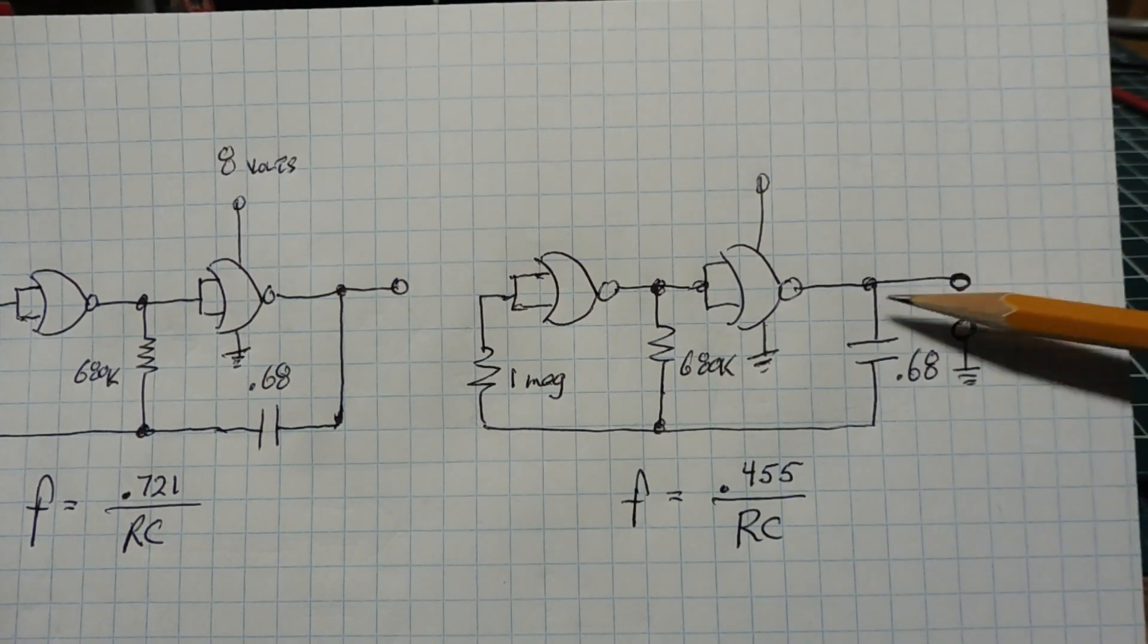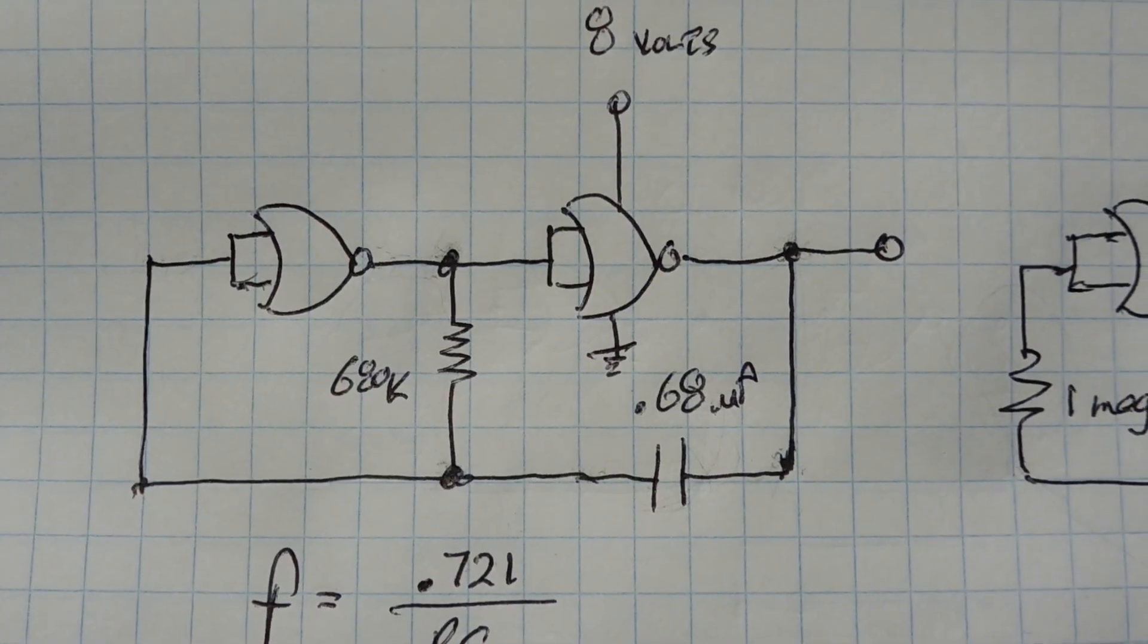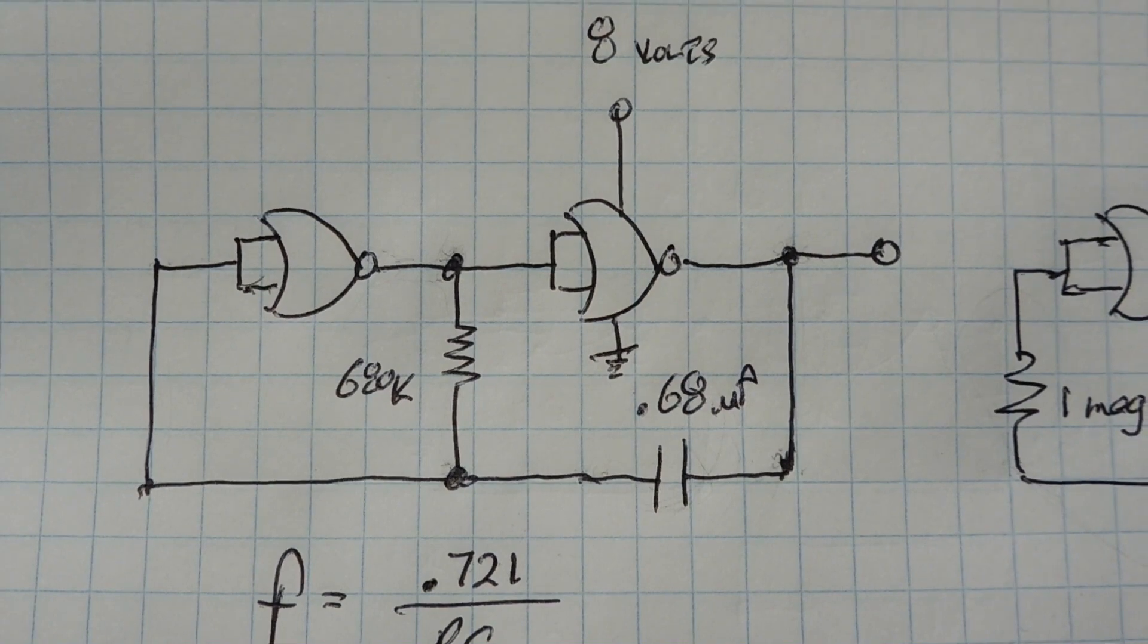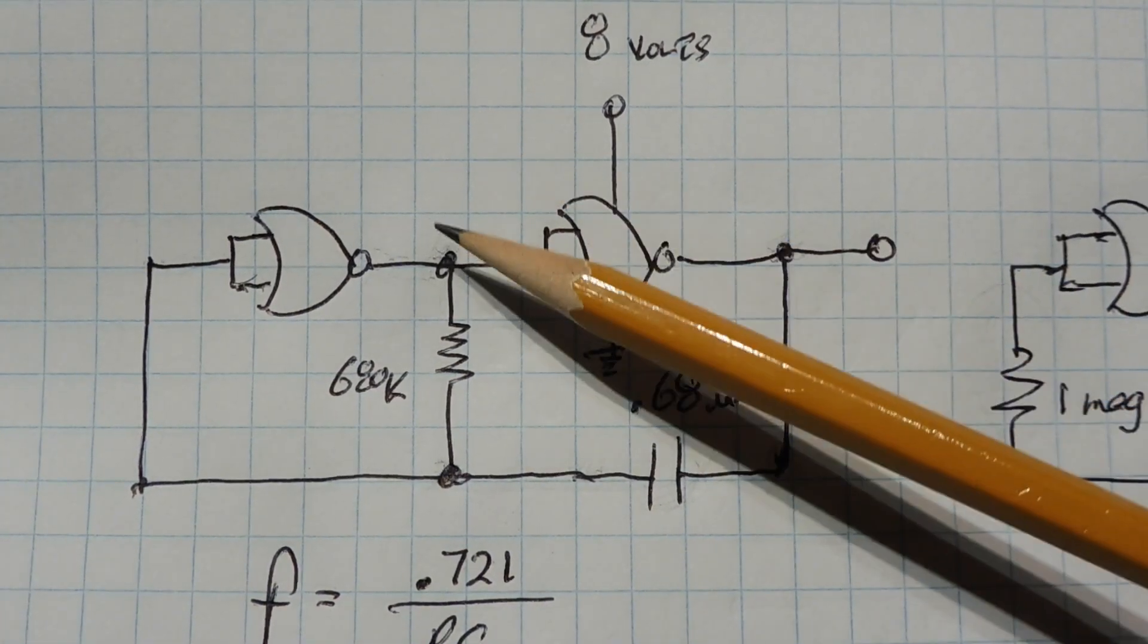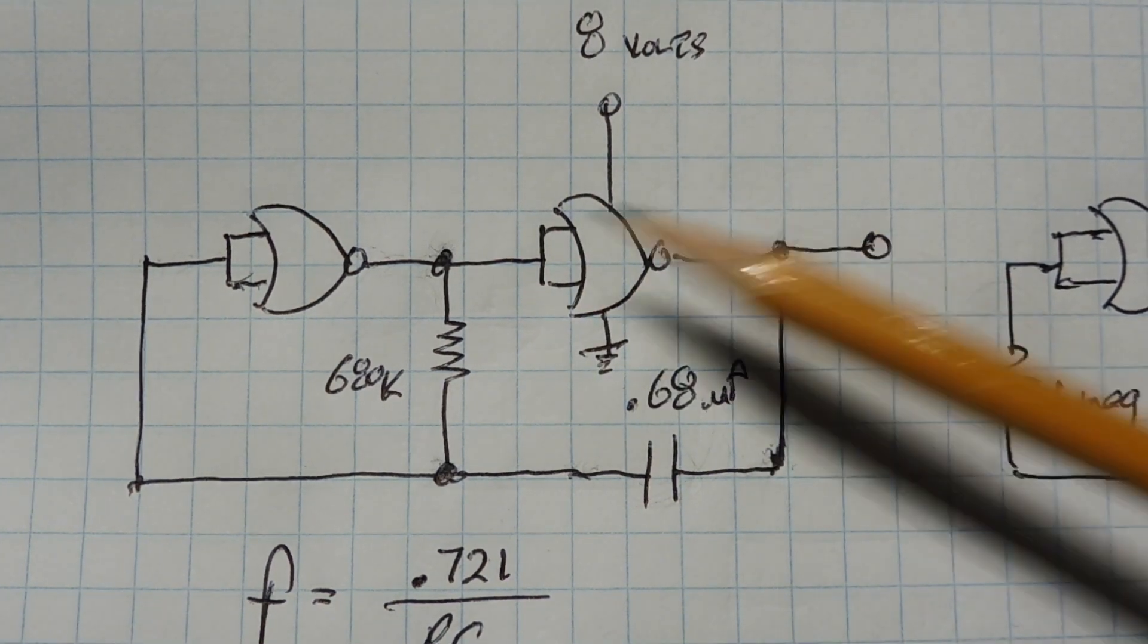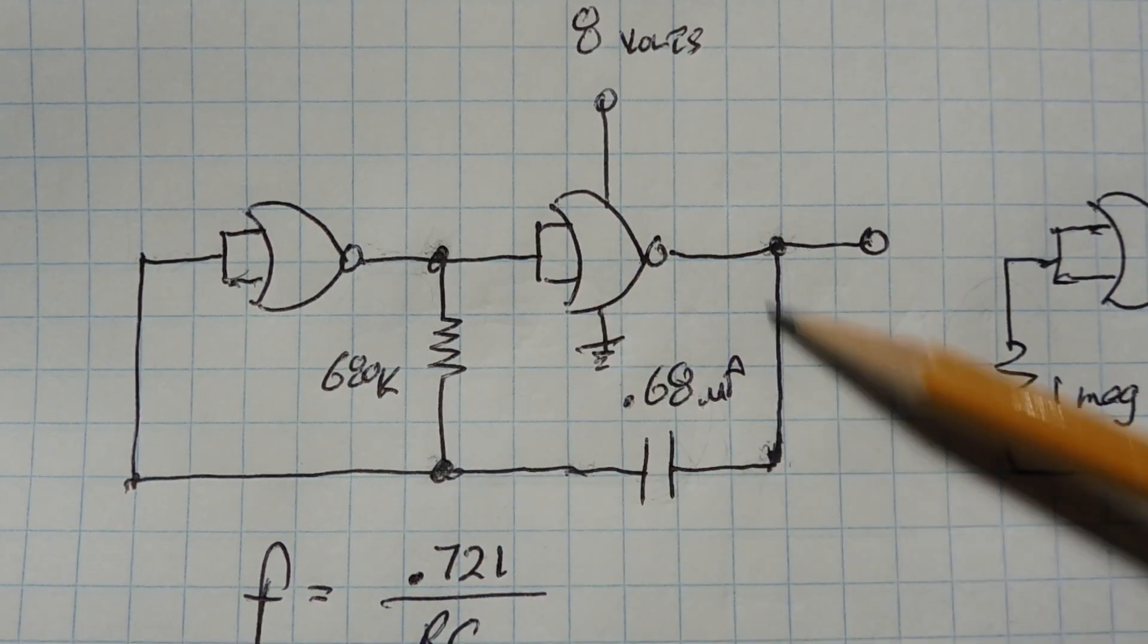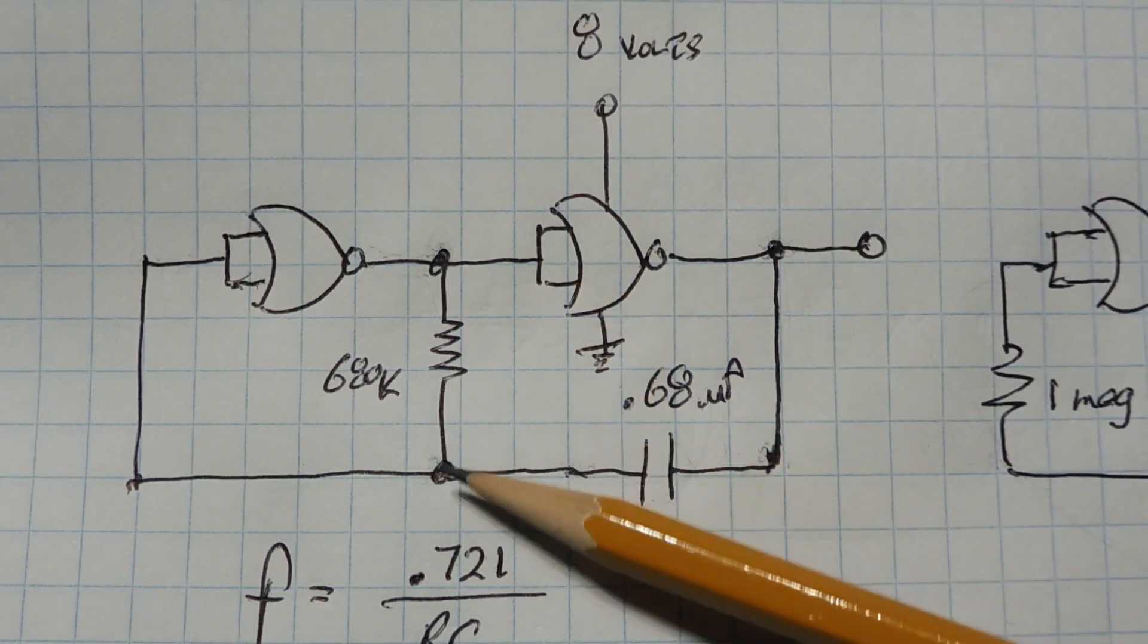Okay, let's check out the operation of this RC oscillator. So we'll start out with this point being high, so this point will be low. So we'll have eight volts on top of the resistor, we'll have ground on this side of the capacitor. So we'll have a series RC circuit. So now this capacitor will start charging up through the resistor until this point here hits half VCC or four volts.